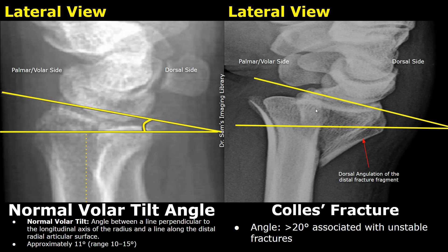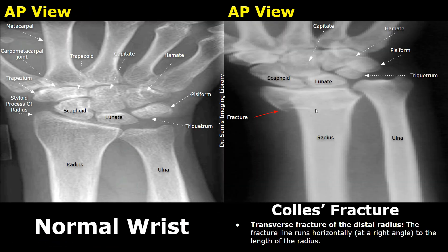Here is another case of a Collis fracture. A transverse fracture is present in the distal radius. It is also an impacted fracture because we see overlapping of the distal fracture fragment on the radius. The radial height is significantly reduced indicating radial shortening, and the radial inclination angle is also severely reduced.